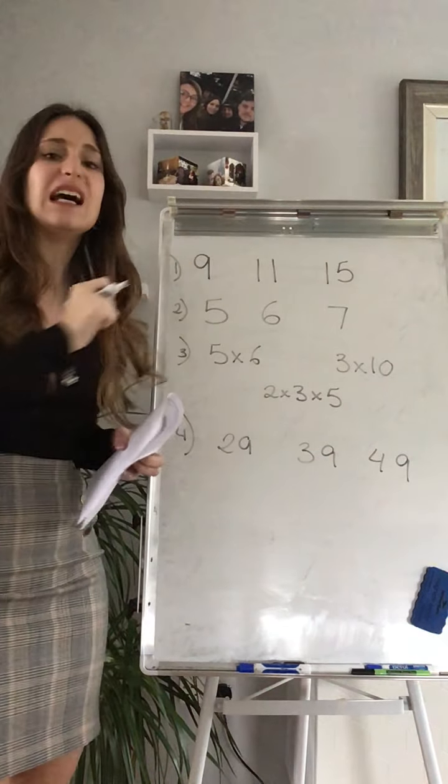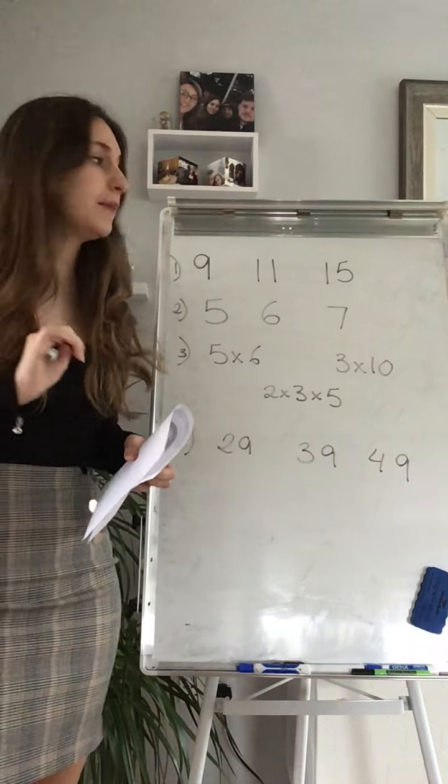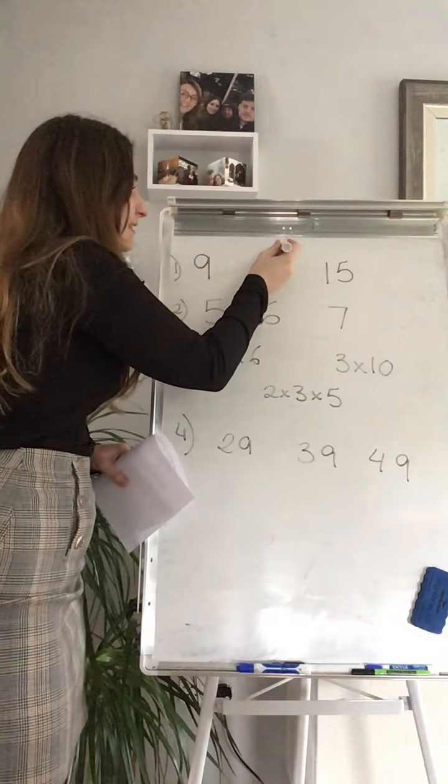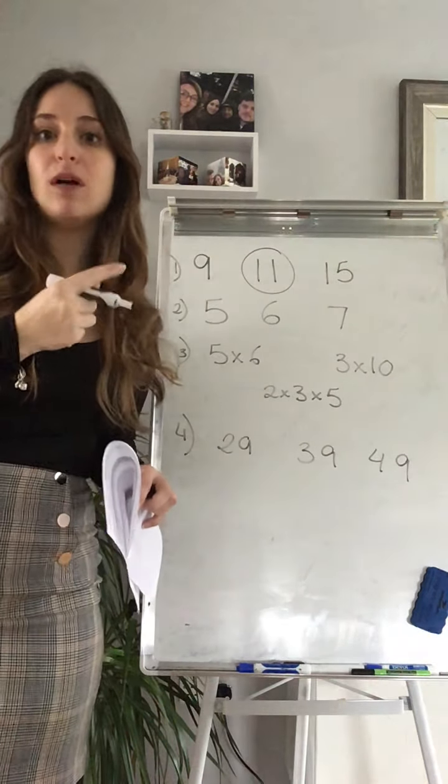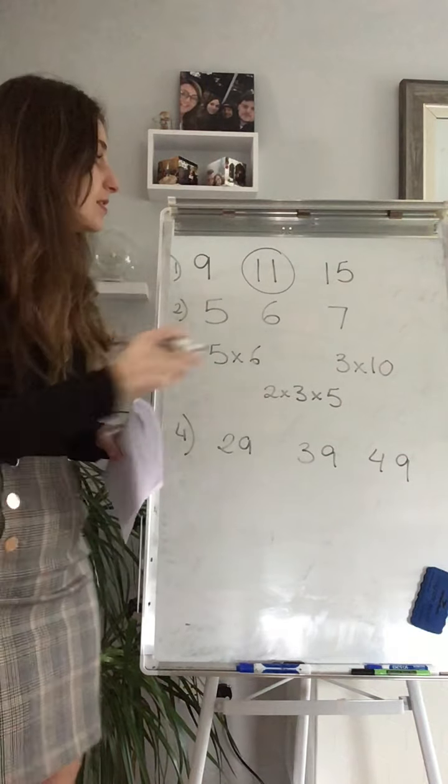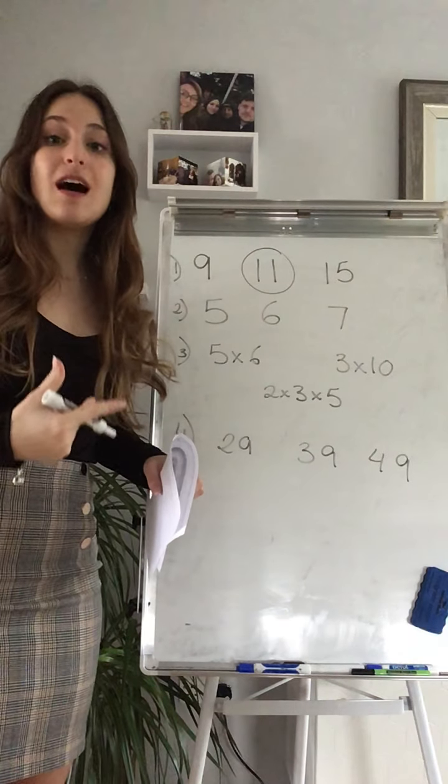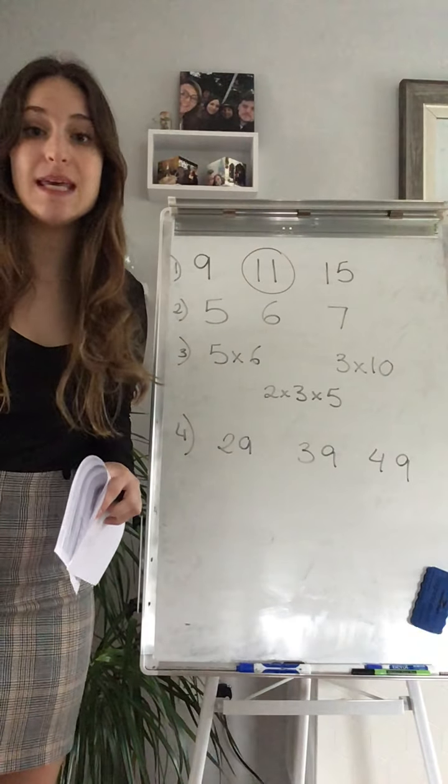What happened with 9? 9, 3 is as well a factor so it's not a prime number. 11? Yes. You can only get 11 by timing 1 times 11 and 11 times 1. So only two factors. 15? I have number 5 and number 3 as well. So for the first one your answer is B.